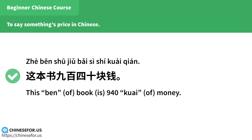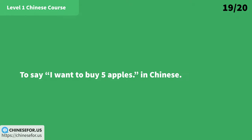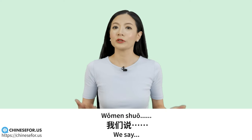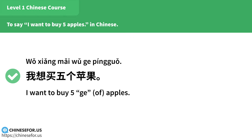To say "I want to buy five apples" in Chinese: 我们不说「我想五个苹果」，我们说「我想买五个苹果」。（The verb 买 must be included.）